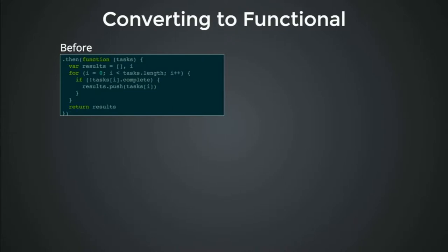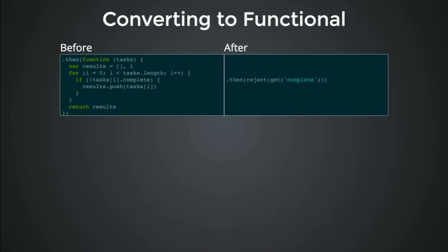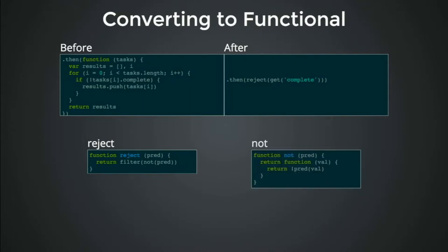We also want to give the ones that are not complete — reject get-complete. 'reject' is the opposite of filter: we want to filter the opposite thing. So we use the built-in filter function but instead of including these things, we exclude them and do the opposite. 'not' is very straightforward — we have a predicate which evaluates true or false, and a value, we invoke it but then negate it, giving us the opposite.